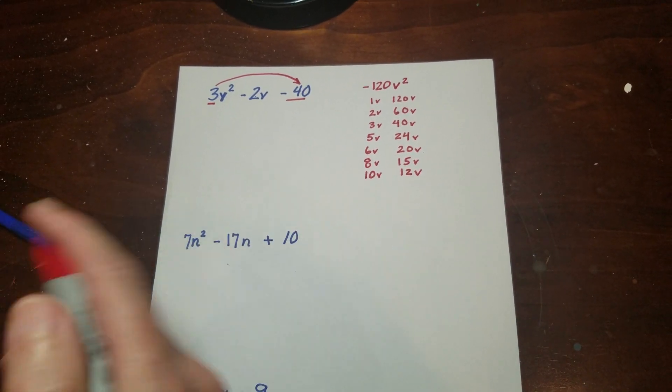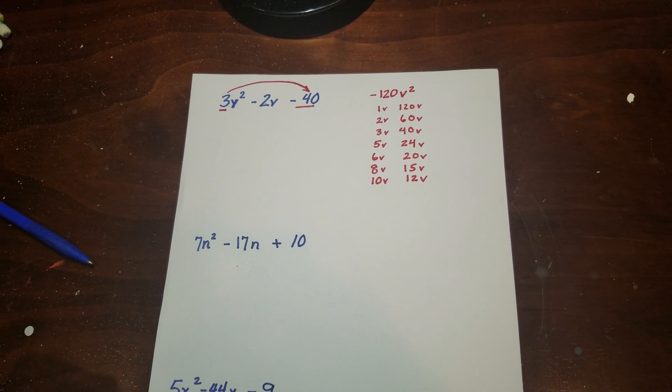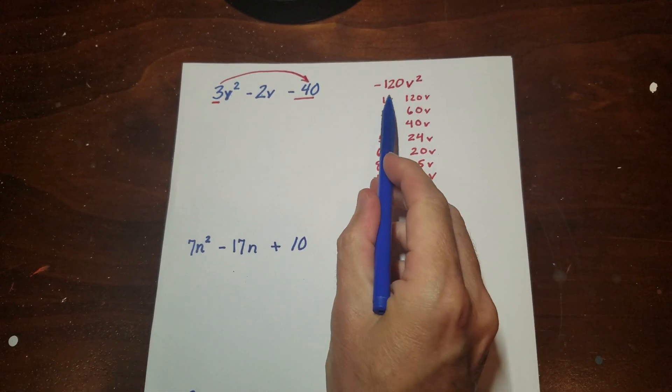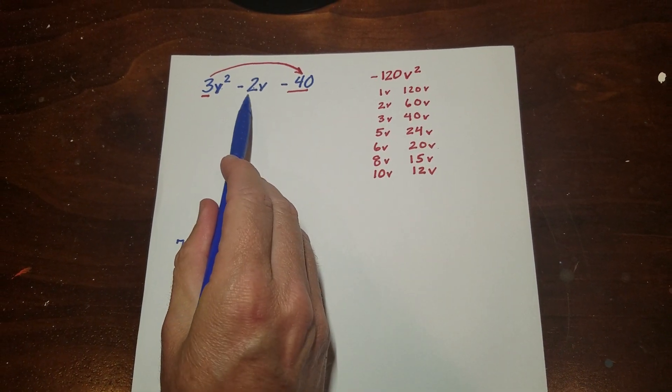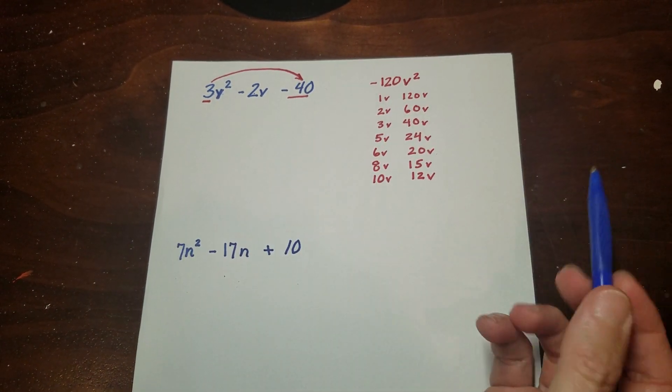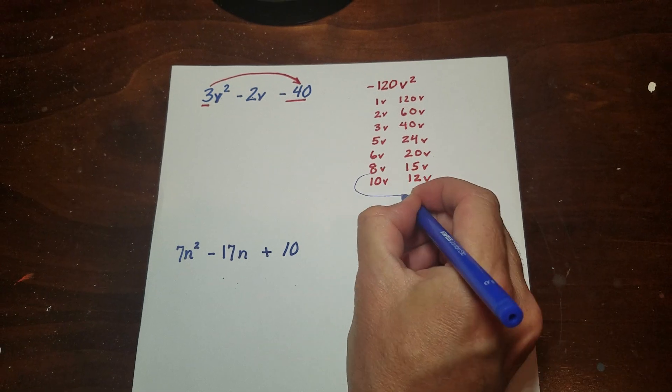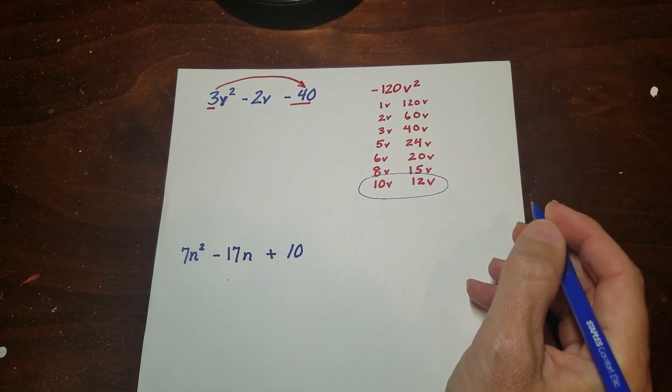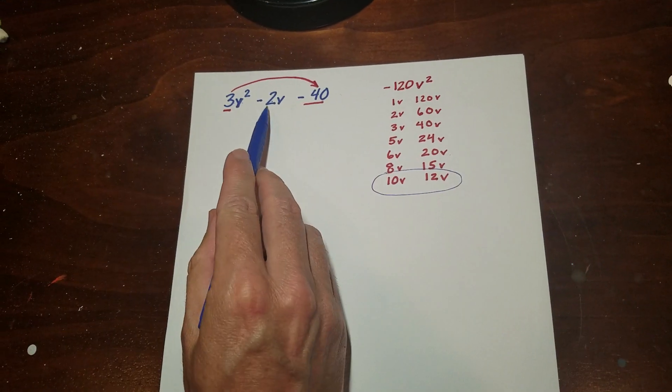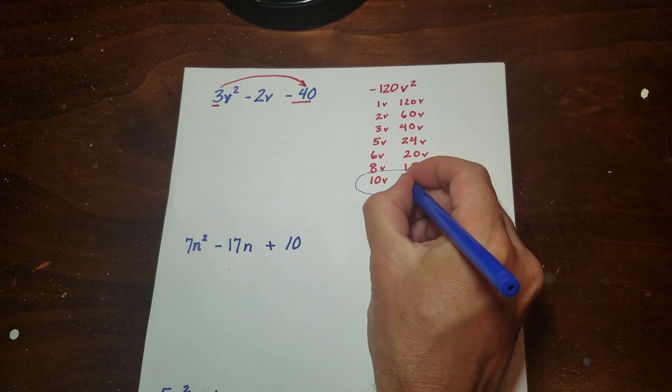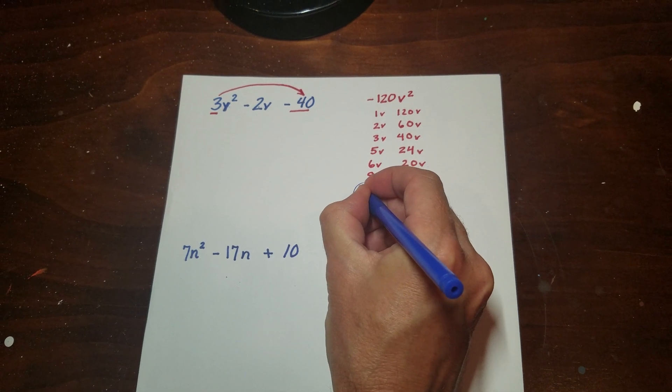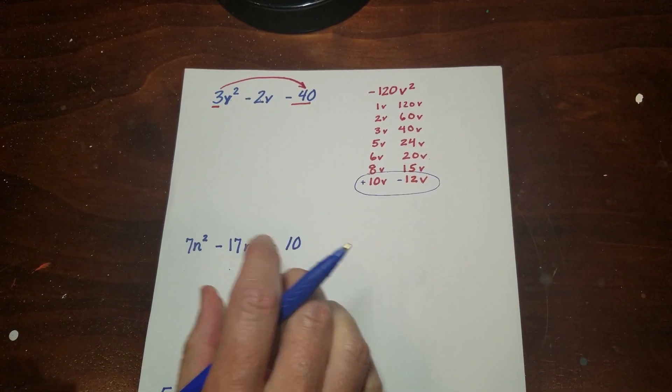But as far as what I do with these, it's the same thing I was doing before. I'm going to try to find a pair of them that will add to this middle term here, which is a negative 2v. So these two look like they're two apart. So in order for me to get negative 2v, what I'm going to have to do is I'm going to have to have a negative 12v and a positive 10.